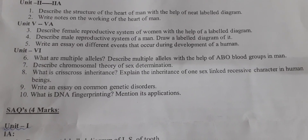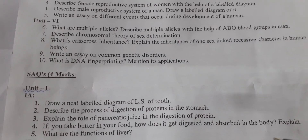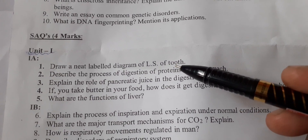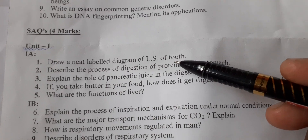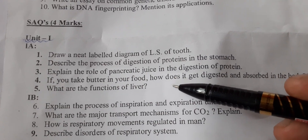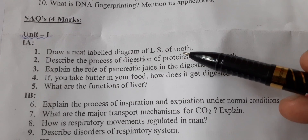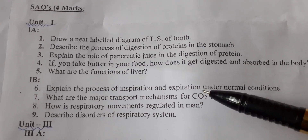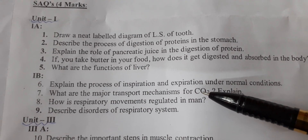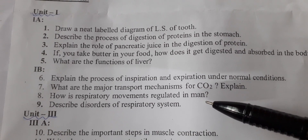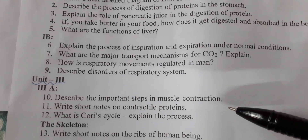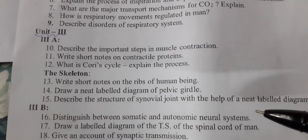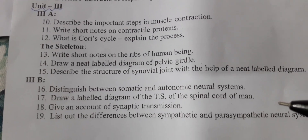Now we move on to SAQs. Unit 1 SAQ part — units 1 through 5 are given here. Unit 1 has two parts: 1a and 1b, with questions 1, 2, 3, 4. Now unit 3 — unit 3 has two divisions: 3a and 3b.